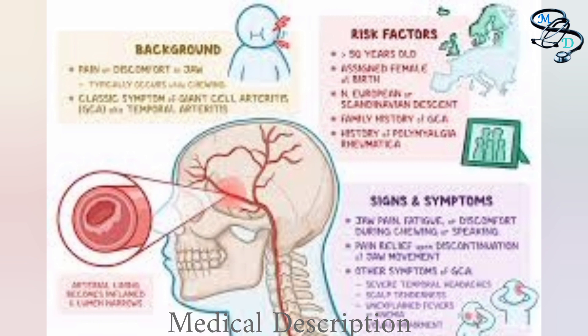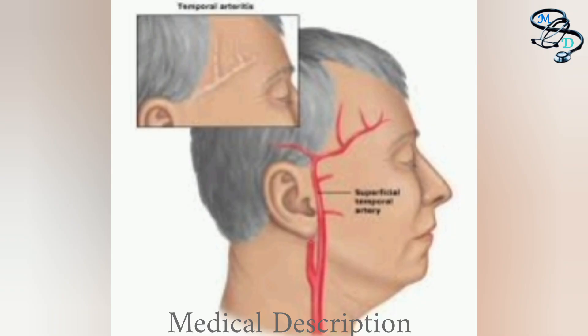If not diagnosed and treated quickly, temporal arthritis can cause damage to eyesight, including sudden blindness in one or both eyes, and damage to blood vessels such as an aneurysm — the ballooning of blood vessels that may burst. Other disorders include stroke or transient ischemic attacks.